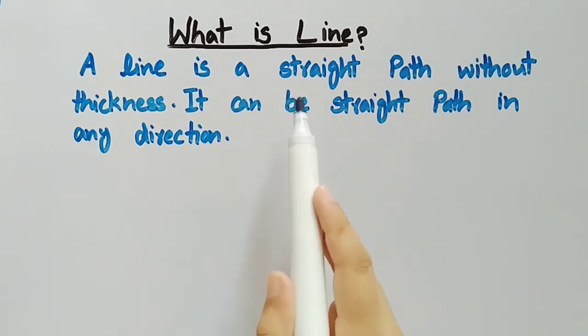Firstly, we will discuss what is a line. A line is a straight path without thickness. It can be straight path in any direction.